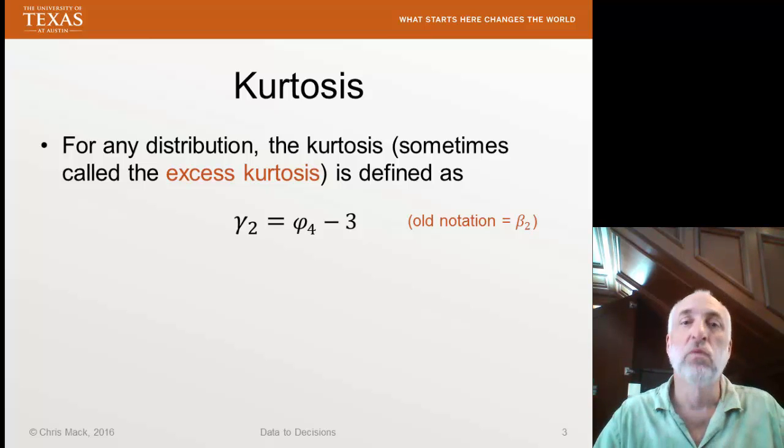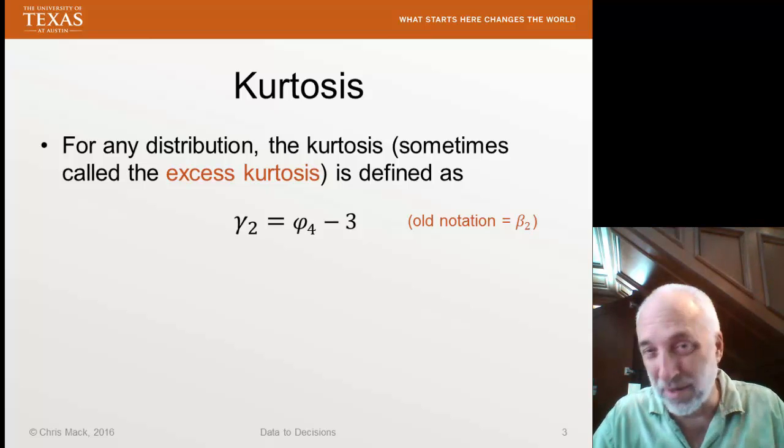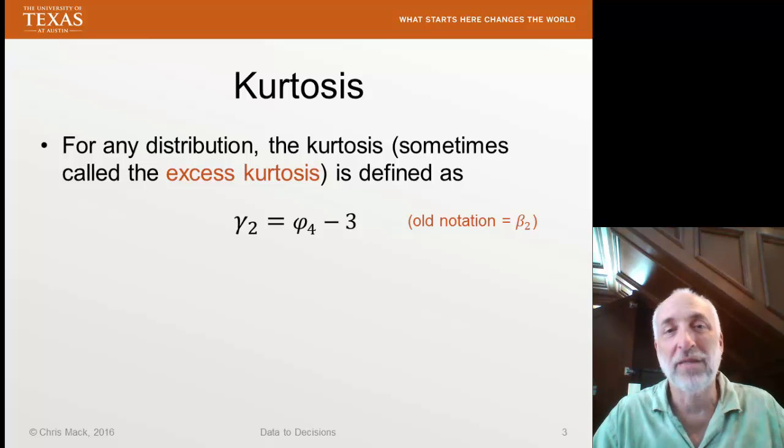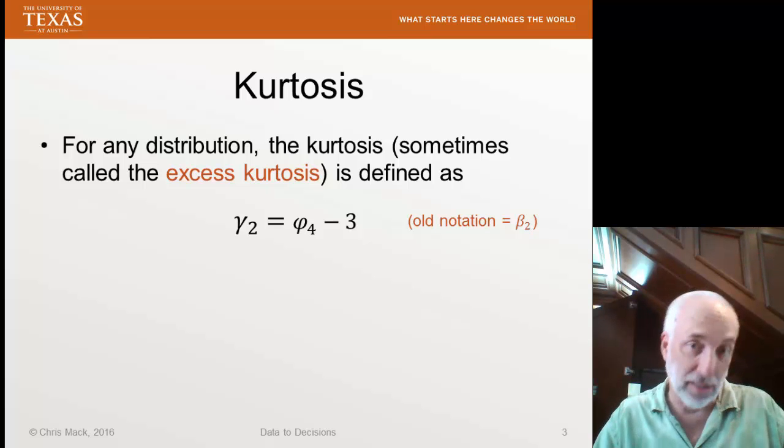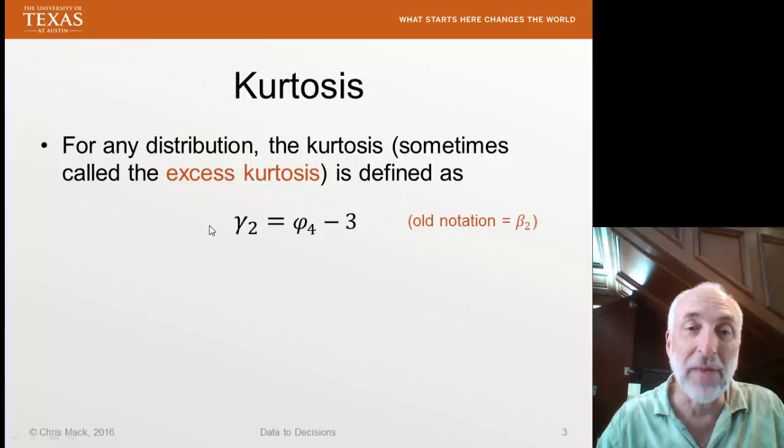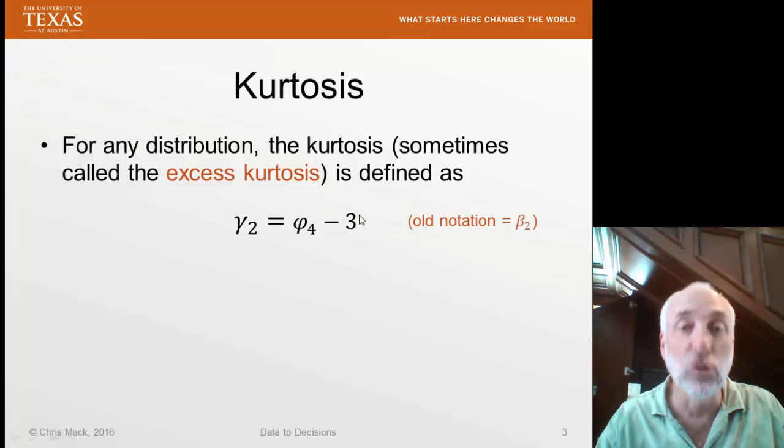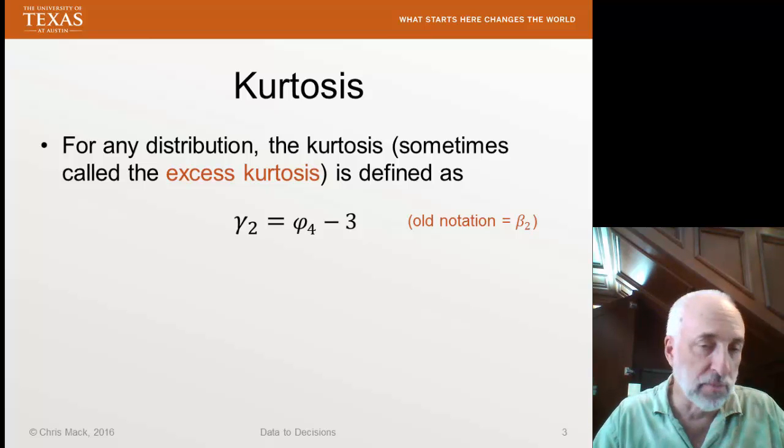Now sometimes we call gamma 2 the kurtosis. Sometimes we call phi 4 the kurtosis, and so many people, myself included, will use those terms somewhat ambiguously. However, the term excess kurtosis is very standardized. If I say excess kurtosis, you know I mean gamma 2, that is the amount in excess of a normal distribution. So I'll try and be more explicit to refer to the excess kurtosis as the thing that we're testing. However, I'm sure I'll slip up and call it kurtosis every now and again.